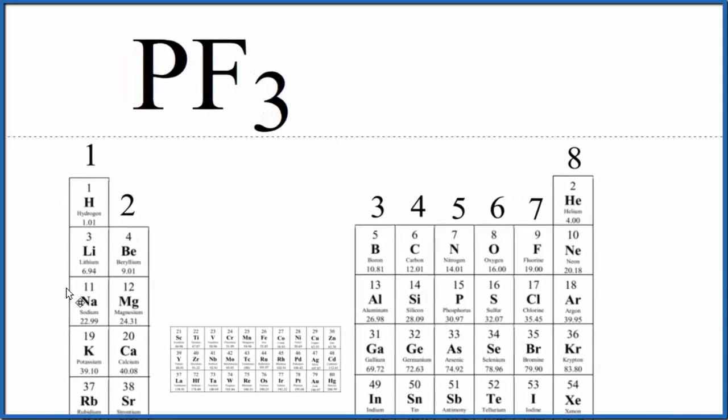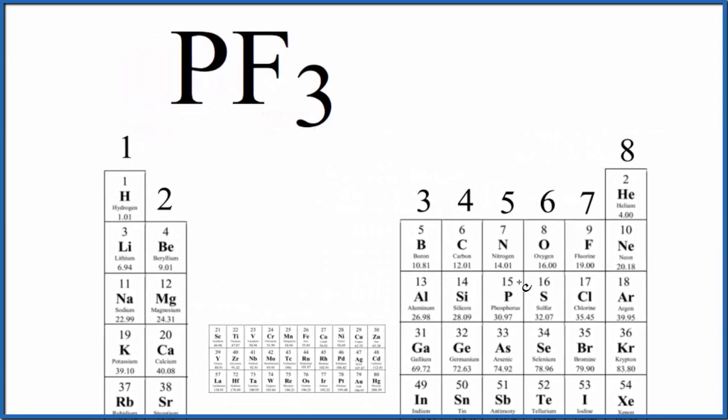The periodic table can help us do that. So if we find phosphorus right here, it's in group 15, sometimes called 5A, it has five valence electrons.